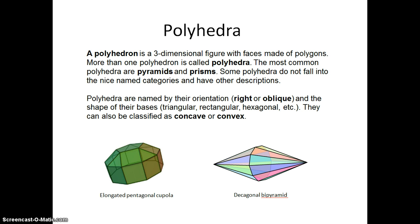The most common polyhedra are pyramids and prisms. These are the named shapes.